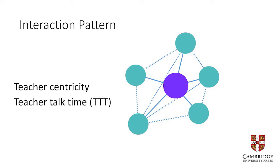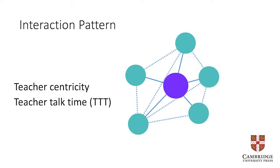Teacher centricity can become teacher dependence, which is the opposite of the independent graduate we want to create. Teacher Talk Time — TTT — is the proportion of time in the session used by the teacher talking. In a lecture it will be most of the time; in a discussion group, seminar, or workshop it needs to be much lower, so Student Talk Time is a higher proportion. When students are talking, they're thinking and acting — much more active in the learning process.